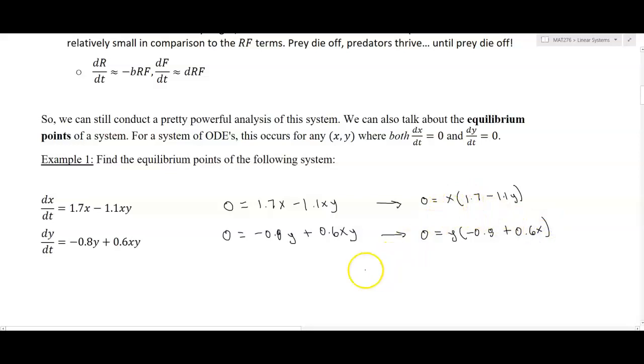Factoring out x leaves me with 1.7 minus 1.1y. I can do something similar for the second equation, factoring out a y to make this y times negative 0.8 plus 0.6x. When I solve the first system, I get two solutions: x equals zero because we have a product, and 1.7 minus 1.1y equals zero. So that's going to give me y equals 1.7 divided by 1.1, or 17/11. This is an or statement, meaning either of these two facts could be true for dx/dt to have a zero rate of change.